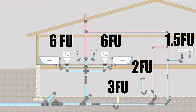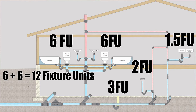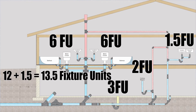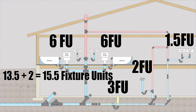Because all these fixtures drain through the building drain, we need to add up all the fixture unit loads to compare to the chart. Two bathroom groups at six each equals 12. Add the double compartment kitchen sink at one and a half, we're at 13.5. Add the clothes washer at two, we're at 15.5. Finally, add three more for the floor drain in the basement — I am now at 18.5 fixture units total.